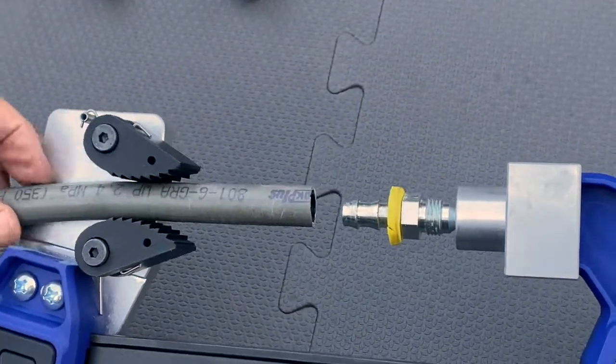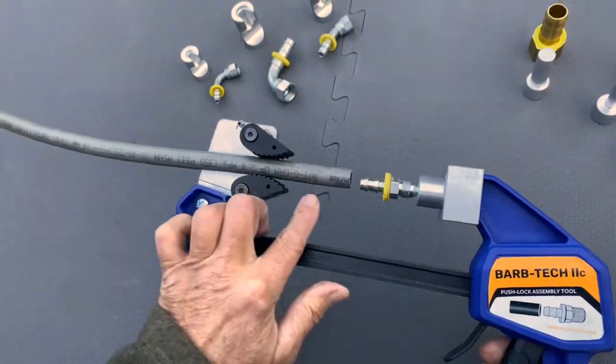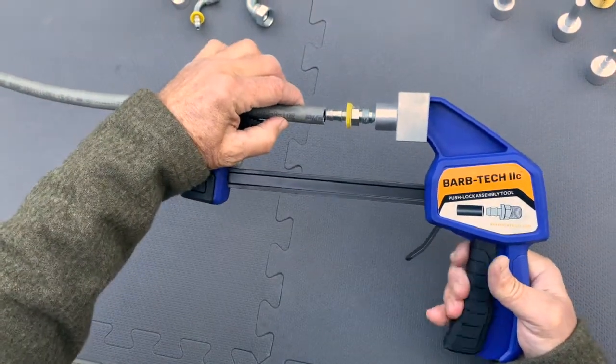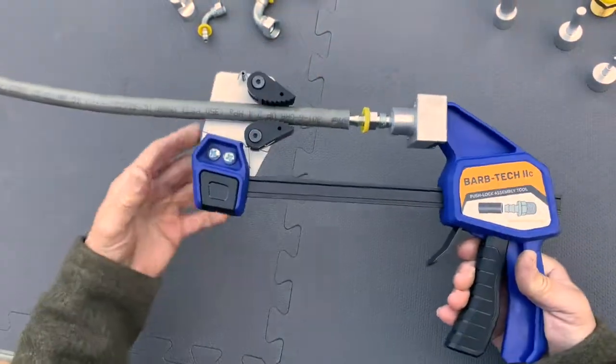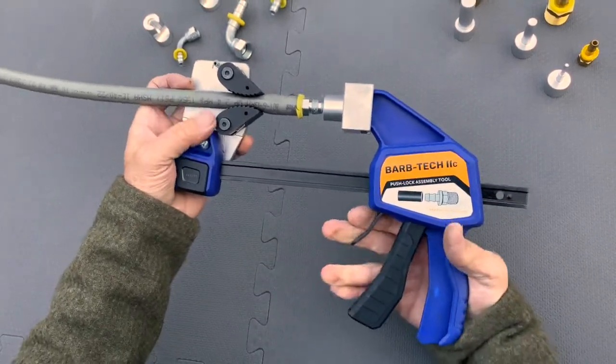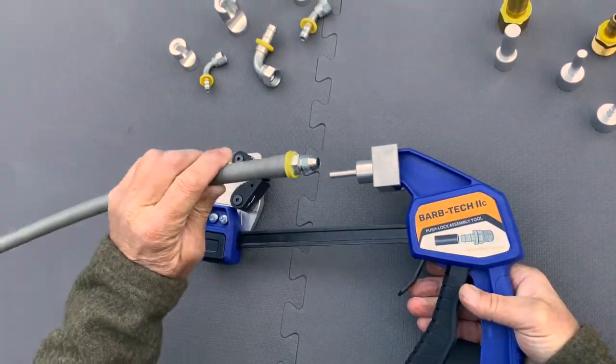We're just going to position the jaws with enough space so that the barbs won't bump into the jaws. Just get it started and press it in. Real simple. Release it, you're done.